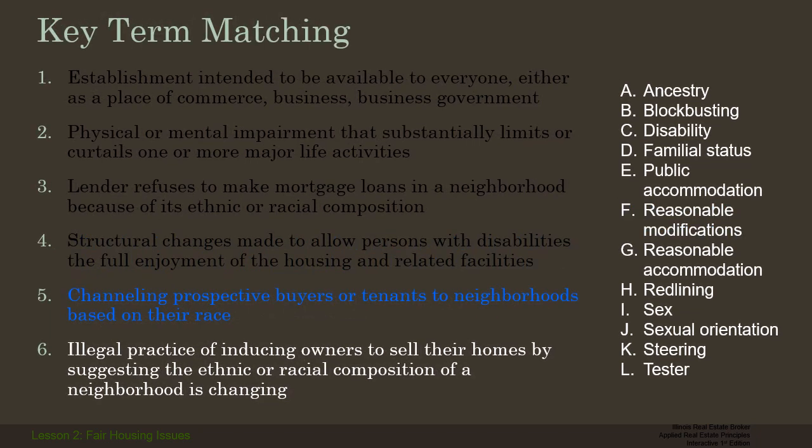Number five: channeling prospective buyers or tenants to neighborhoods based on their race — that's not done a lot anymore, but it was done back in the 50s, 60s, even up until the 80s. That's called racial steering. Real estate brokers would channel those of various ethnic or racial backgrounds into certain areas within the town or community — sort of like 'here's where you'll be comfortable, there's more of your kind.' That's steering, and it's an illegal fair housing activity that could get you into fair housing court.